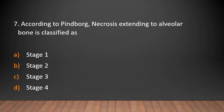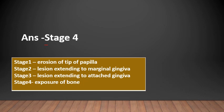MCQ 7: According to Pindborg, necrosis extending to alveolar bone is classified as Stage 1, 2, 3, or 4? Answer: Stage 4. Pindborg classified the stages of progression of ANUG into four stages: Stage 1 — erosion of tip of papilla, Stage 2 — lesion extending to marginal gingiva, Stage 3 — lesion extending to attached gingiva, Stage 4 — exposure of bone.